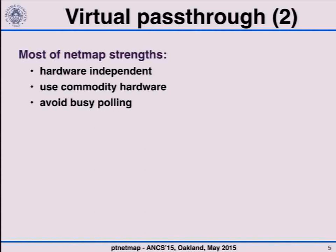With our solution, we can try to keep the advantages of NetMap, which is hardware-independent — it is a software solution that talks to hardware in the way operating systems do, by providing an abstraction that isolates the application from the real hardware. At the same time, using commodity hardware — for hardware pass-through you need an adapter that already has, for example, single-rooted IOV with several hardware virtual devices. We also want to avoid busy-wait polling, because this doesn't play well for a general-purpose API running in a general-purpose operating system.